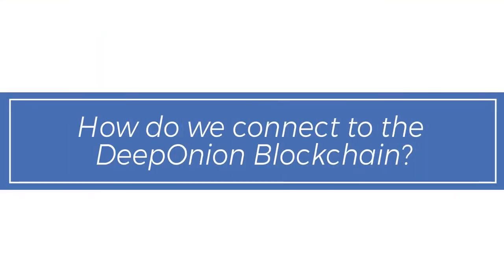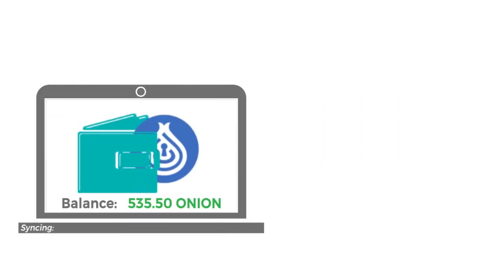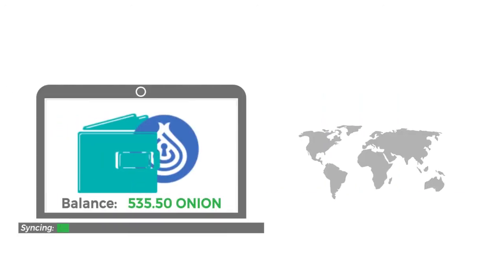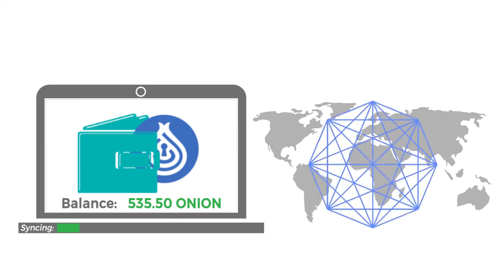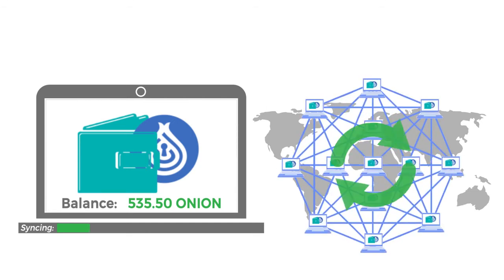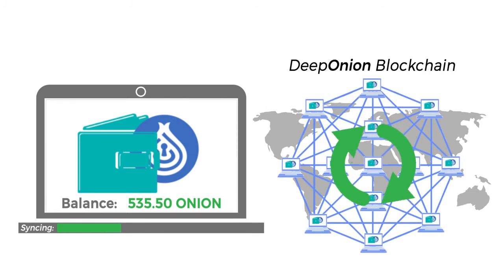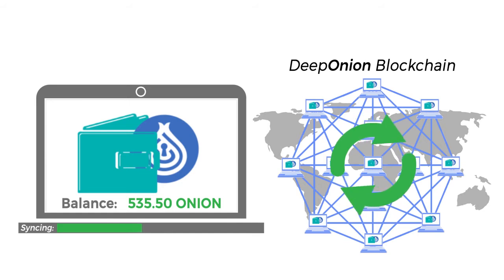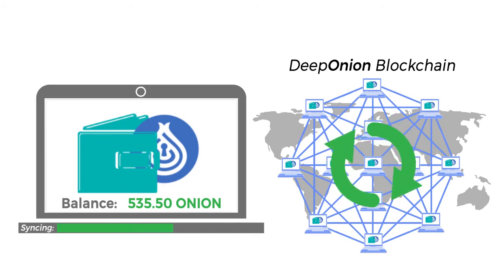How do we connect to the DeepOnion blockchain? In order to use DeepOnion, you need to continuously download the DeepOnion blockchain, which is called synchronization, or sync for short. By doing this, we constantly have up-to-date information about our transactions and our balance.